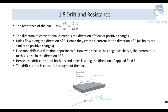The direction of conventional current is the direction of flow of positive charges. Holes flow along the direction of the electric field E, while electrons drift in the opposite direction. Since electrons have negative charge, the resulting current is also in the direction of the electric field. The drift current of both electrons and holes is along the direction of the applied field E, and the drift current is constant throughout the bar.